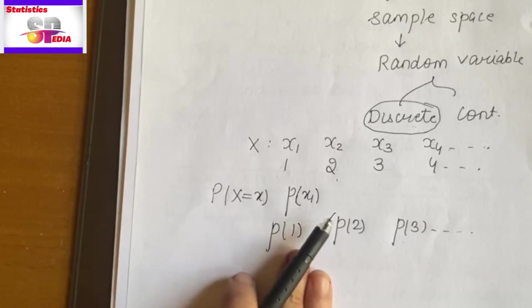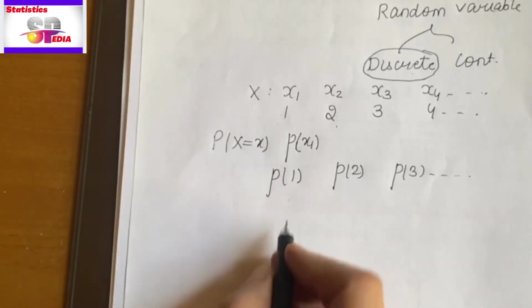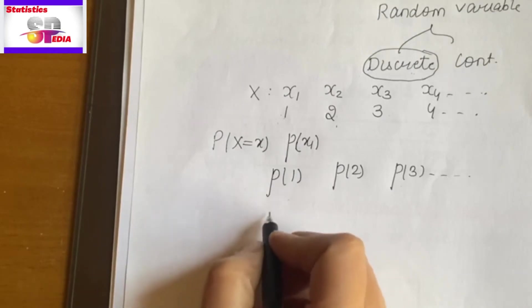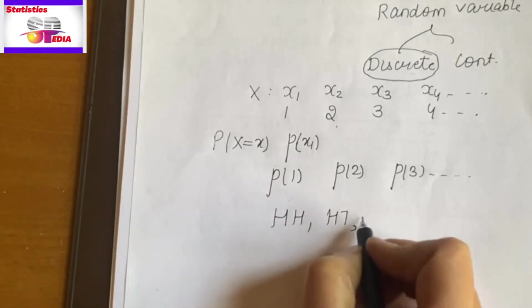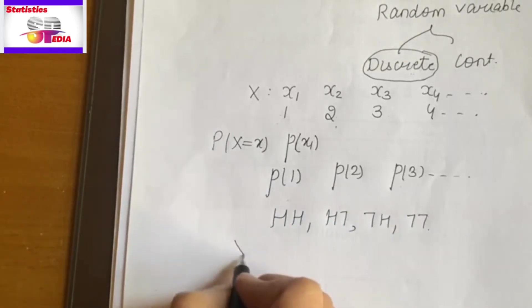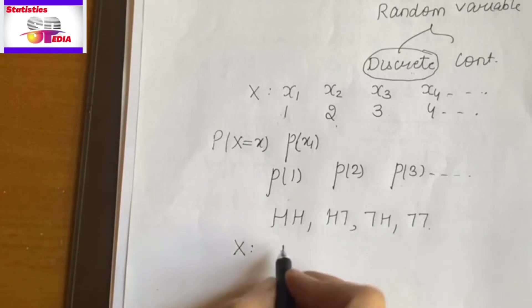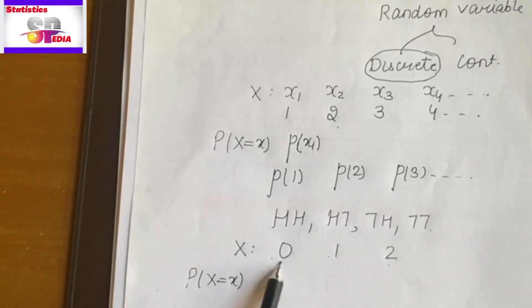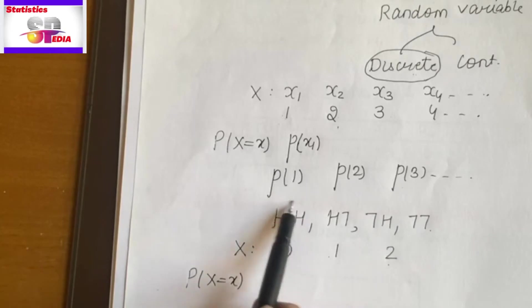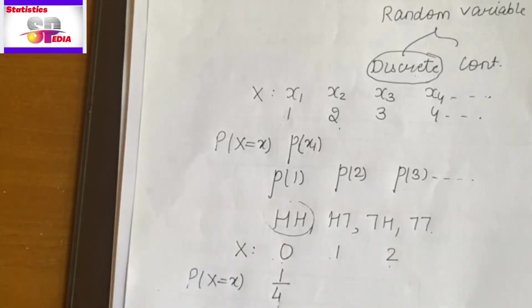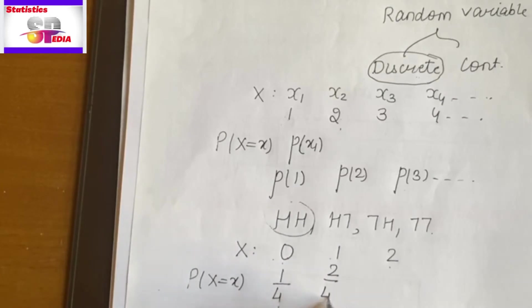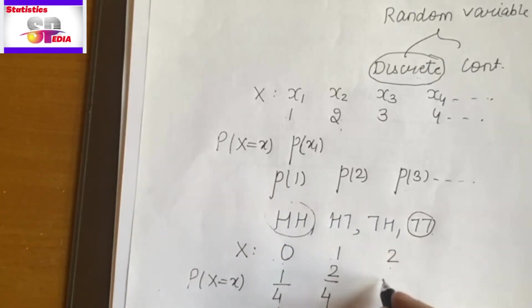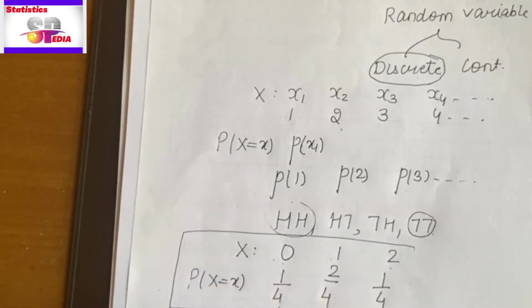Let's understand with a coin example. Suppose you toss a coin twice — this is your sample space. Now X is your number of tails. So what are the possible values? 0, 1, or 2. Now at each point we define the probability. When tails is 0, the probability is 1/4. When tails is 1, the probability is 2/4. When tails is 2, the probability is 1/4. So this table — this is your distribution.